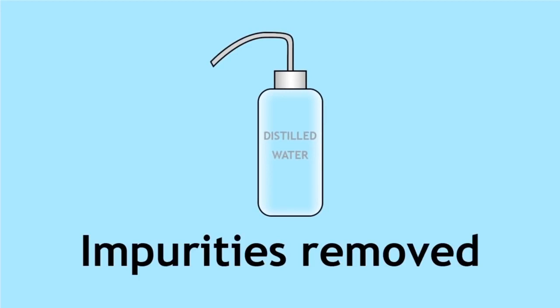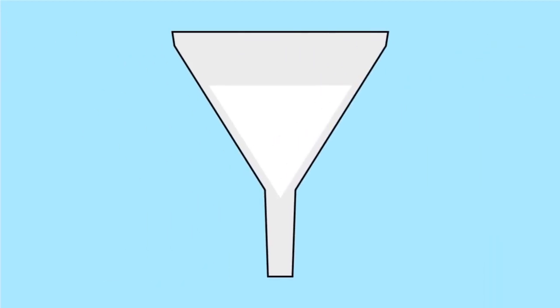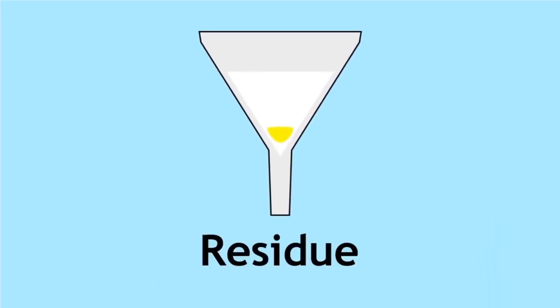This filtration process separates a solid from a liquid. The solid collected is known as the residue, and the liquid that the solid is separated from is known as the filtrate.